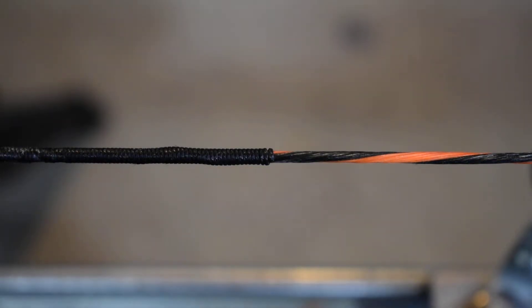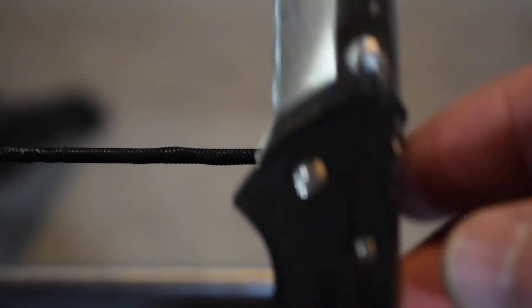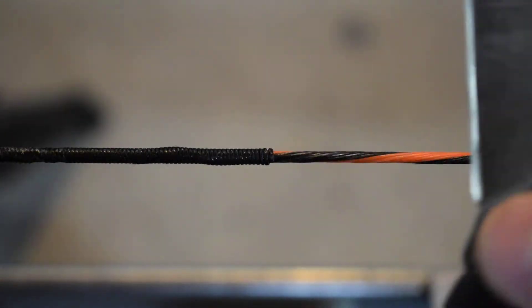Another quick tip here on how I like to remove serving on a bowstring without cutting the string. I've got this cheap Buck Bantam pocket knife that I've had forever.